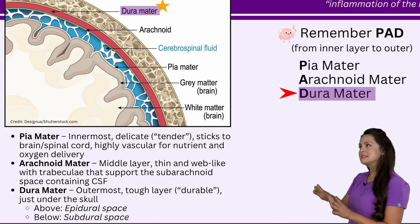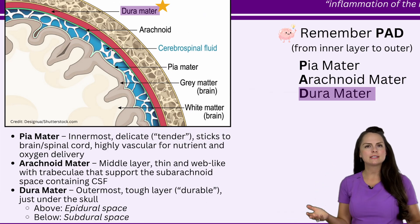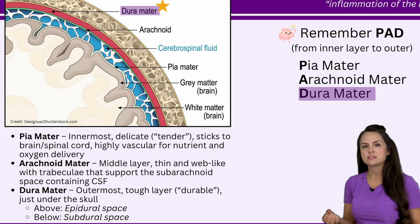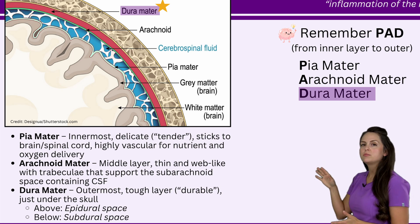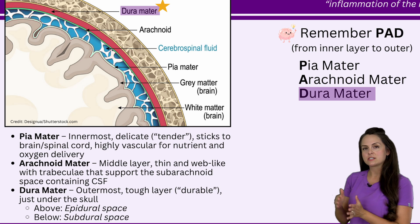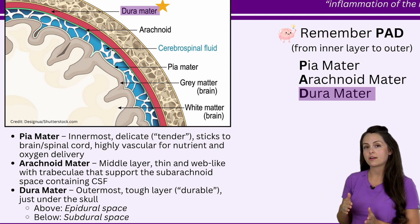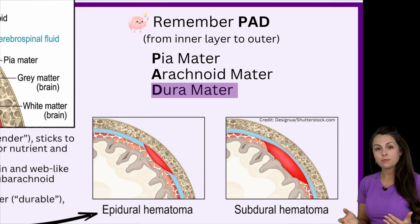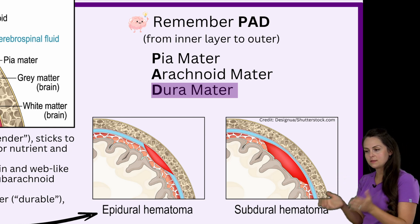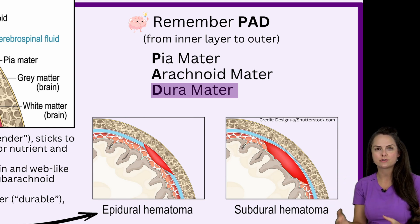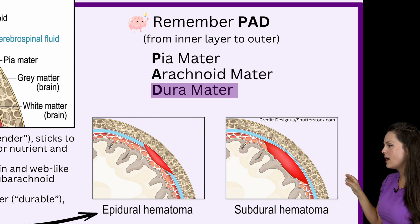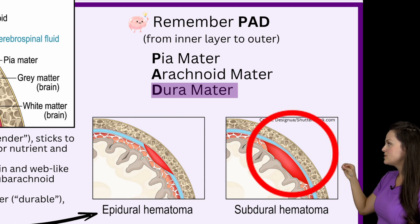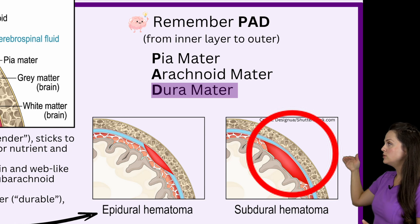Lastly, we have the dura mater — the outermost layer. To help you remember this layer, think of the English word durable, meaning strong and tough, which really describes it. It's extremely strong and tough, and you'll find it just below the skull bone. Above this layer is a special space called the epidural space, and below it is the subdural space. You may hear epidural and subdural related to hematoma — a hematoma is a collection of blood outside of blood vessels, like a pocket of blood. Here you can see an example of an epidural hematoma with that pocket of blood above the dura mater, and a subdural hematoma hanging out below it in the subdural space.